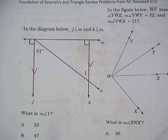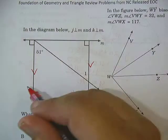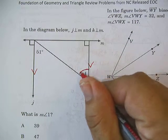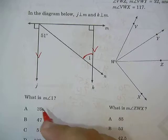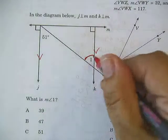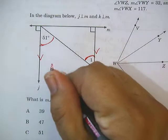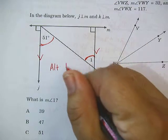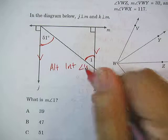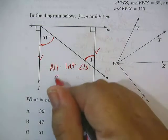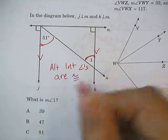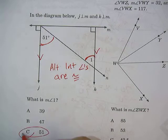This is the fast way to do this problem. So if these lines are parallel, angle 1, that's what they want to know. What is the measure of angle 1? Angle 1 and angle 51 are a special type of pair. They are alternate interior angles. And alternate interior angles are congruent. They're the same. So I can just say the answer C.